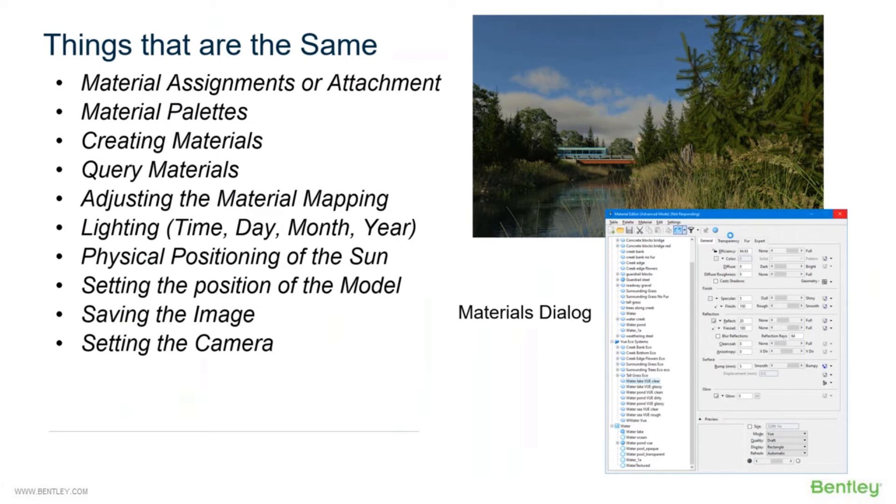Lighting is still the same: time, day, month, year. I can still set up my lighting, I can still physically position my sun in my model the same exact way that I did in V8i. Setting the position of the model, if I want to choose a site coordinate system, a Google Earth bookmark, to where my project is located, I can get the correct sun and still set time, day, month, and year and set the position of the model in the correct location. That's all done exactly the same way.